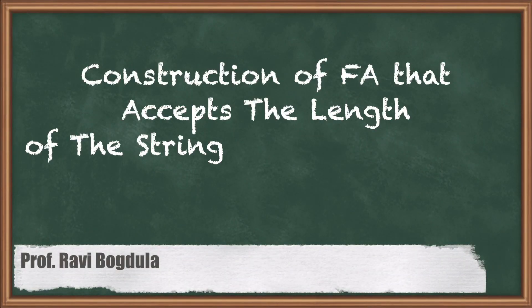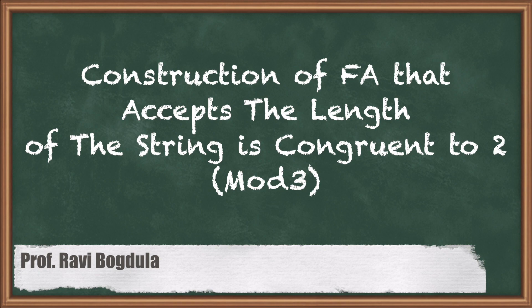Hello students, our next topic is construct the FA that accepts all the strings of a's and b's where the length of the string is congruent to 2 modulo 3.